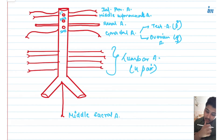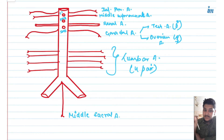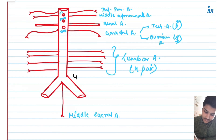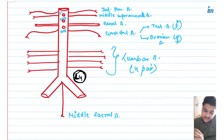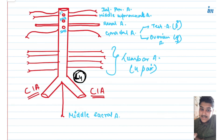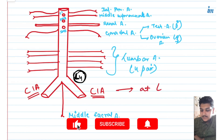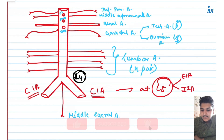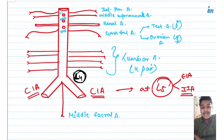The next category is the terminal branches — these are the final branches the abdominal aorta gives off. At the lower border of L4, the abdominal aorta divides into two common iliac arteries. These common iliac arteries then divide at the lower border of L5 into an external iliac artery and an internal iliac artery. The external iliac artery continues as the femoral artery, and the internal iliac artery divides into an anterior and a posterior division.